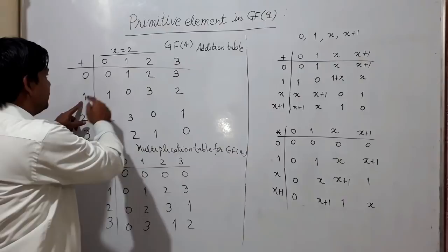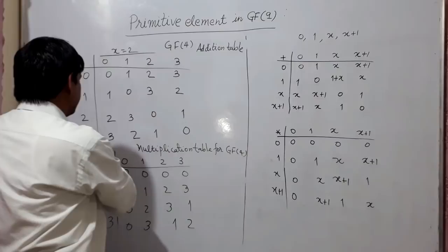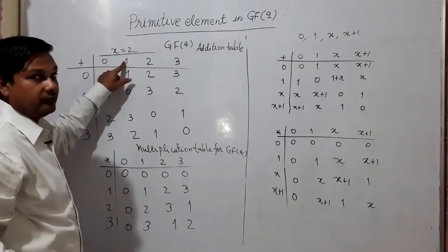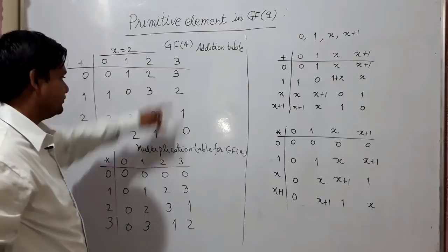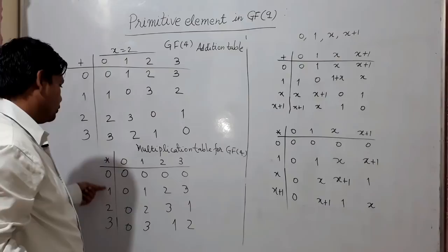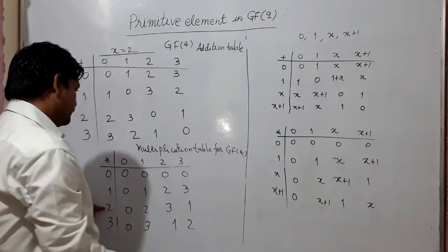From the tables we can observe: the additive inverse of 1 in GF4 is 1, the additive inverse of 2 is 2, and the additive inverse of 3 is 3. For multiplicative inverses: the multiplicative inverse of 1 is 1, the multiplicative inverse of 2 is 3, and the multiplicative inverse of 3 is 2.